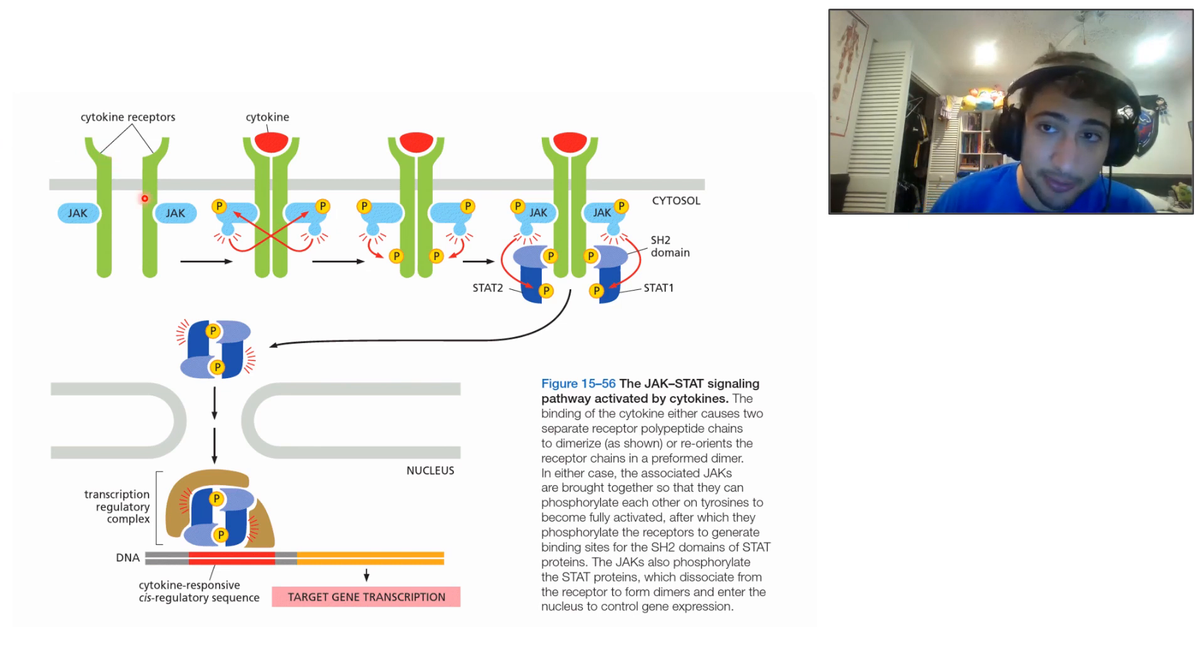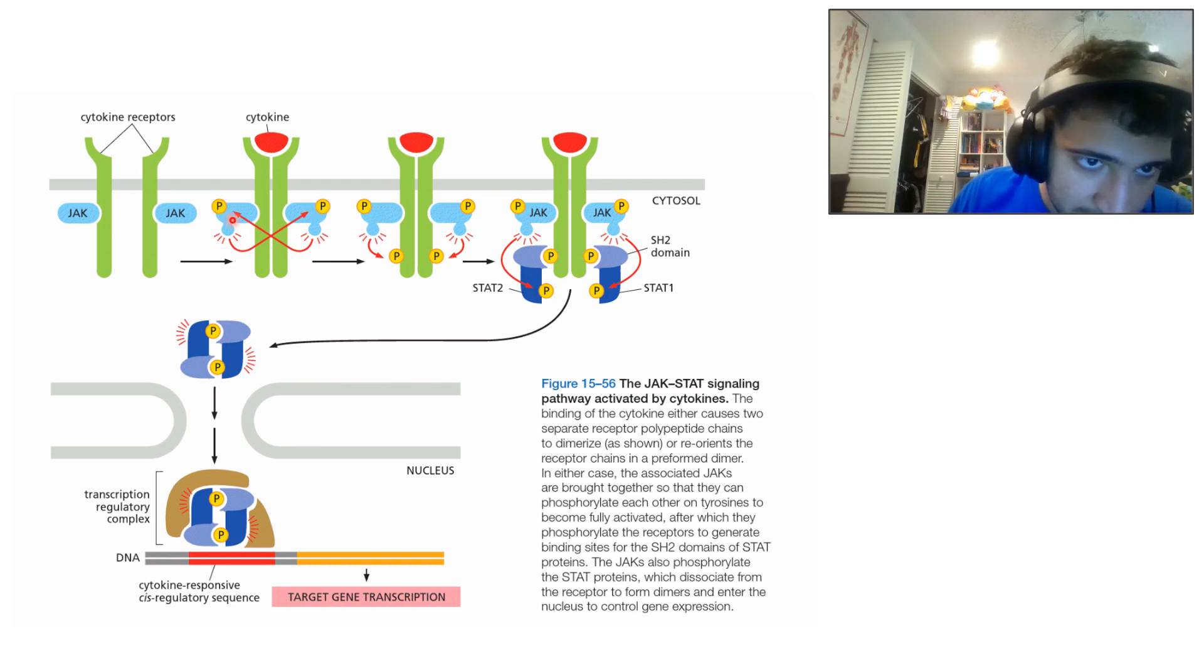So, going back to the receptor itself, the JAKs are going to be, when the cytokine binds, or whatever the signal is, is going to bind, the JAKs are brought close together, and they're going to phosphorylate each other. He phosphorylates him, and he phosphorylates him. And then each one independently phosphorylates its own polypeptide. Polypeptides are brought close together. These guys phosphorylate, and then they phosphorylate their own polypeptide.